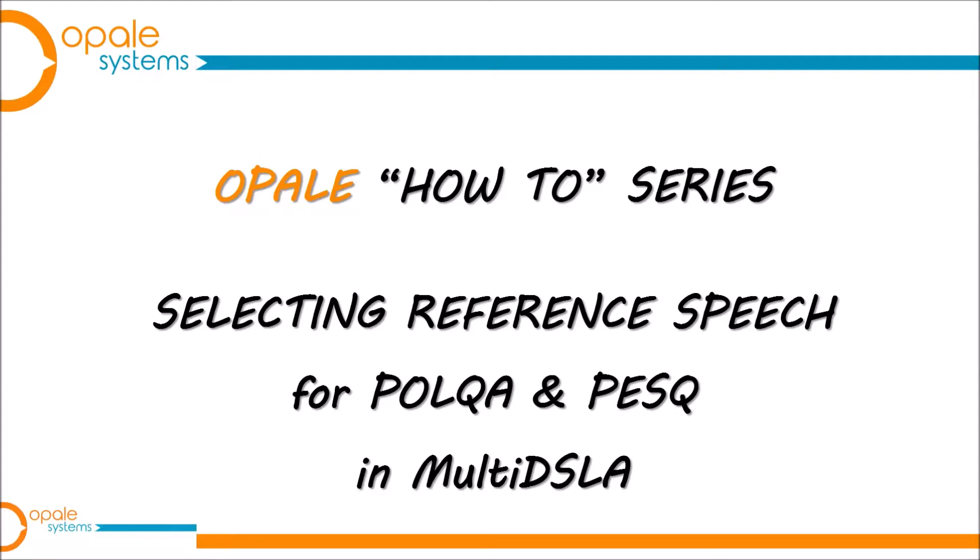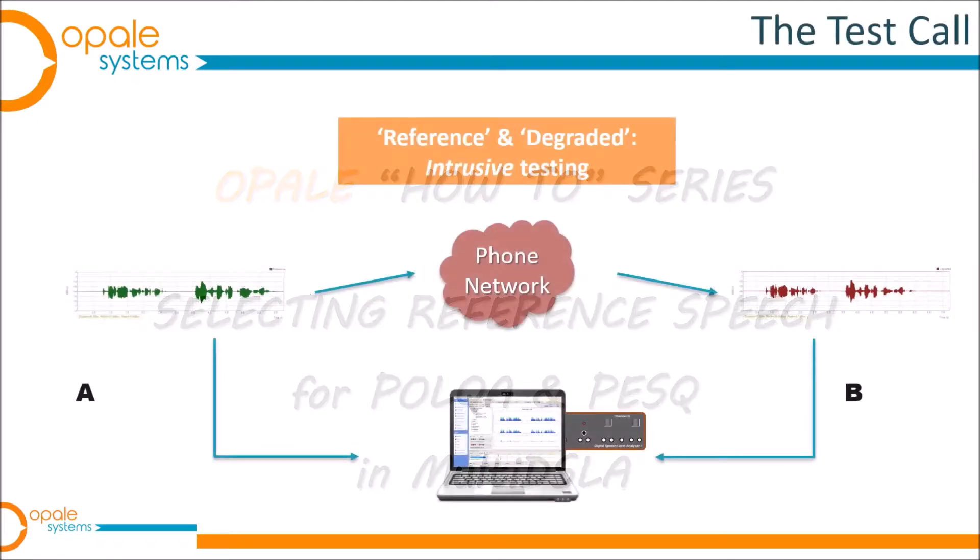This time we're looking at the selection of reference material. You may remember from previous videos that we discussed the model used when making speech quality or voice quality measurements. We have a reference clean speech signal which we inject into the network we're testing, and then we have the corresponding degraded signal which we capture at the far end of the phone call or network under test.